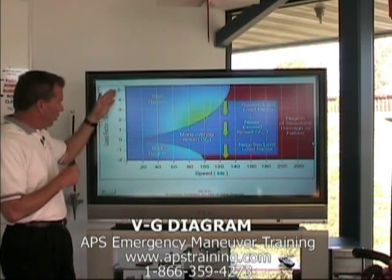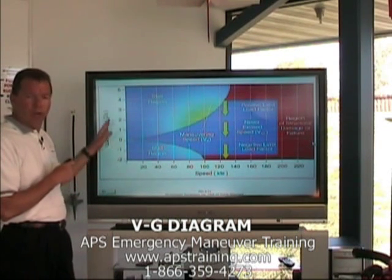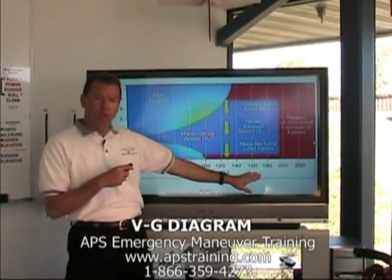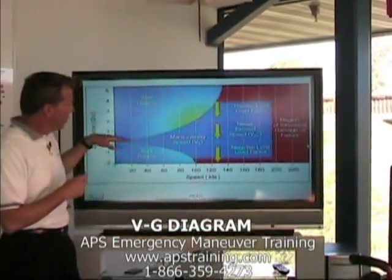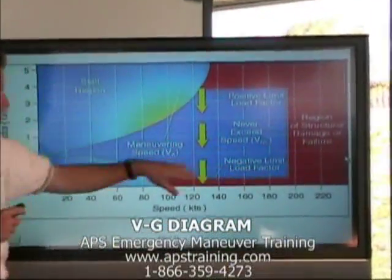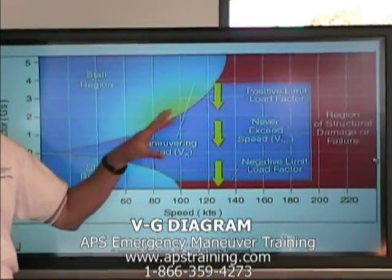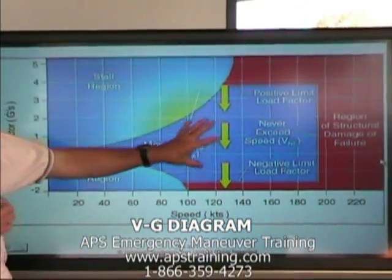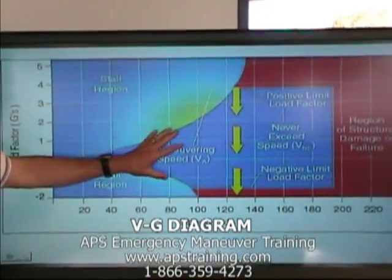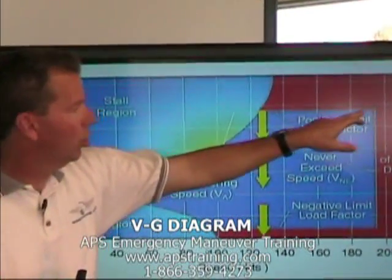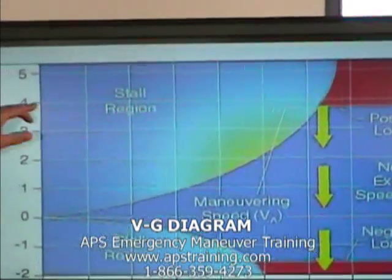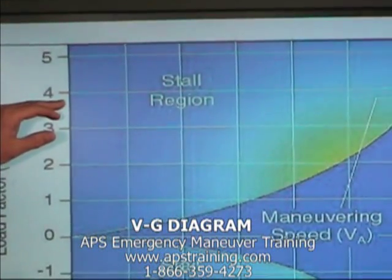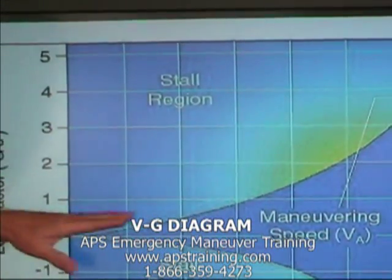Here we have the load factor, or how many G's you're pulling in the aircraft, and we have airspeed along the bottom. This dark blue area represents the flight envelope of the aircraft. This is a generic aircraft. We can see that the load limit or design limit of this airplane is 3.8 G's, so it's a normal category airplane.